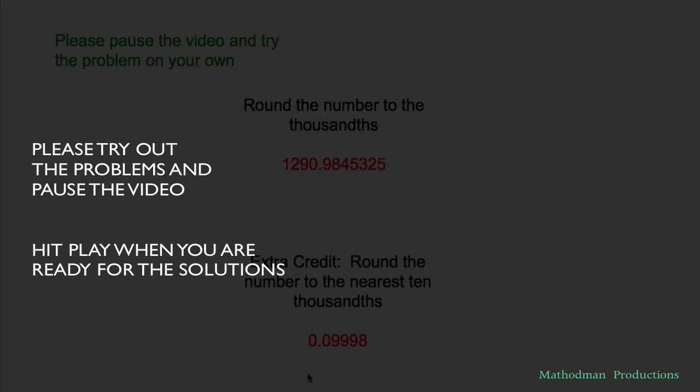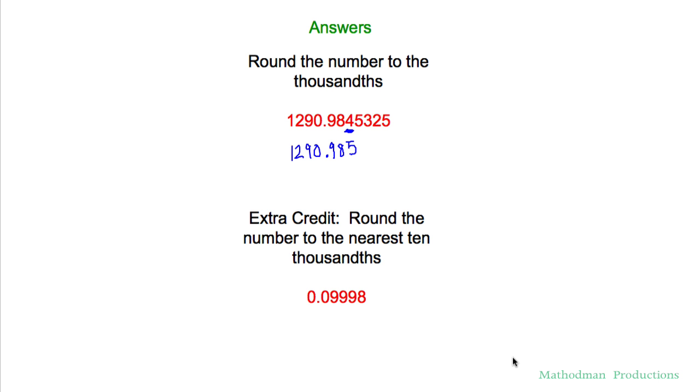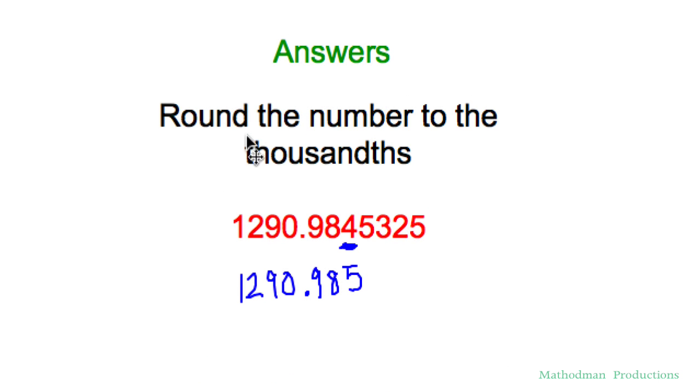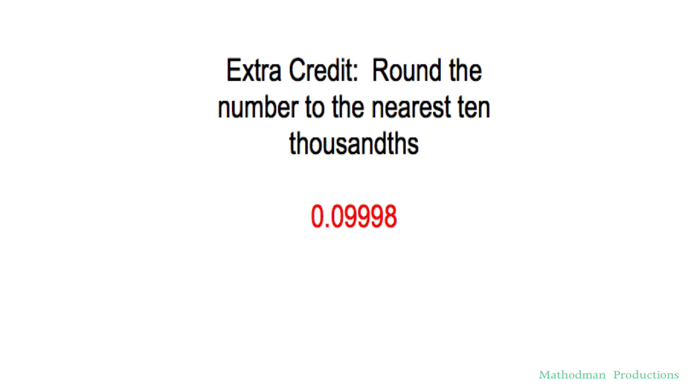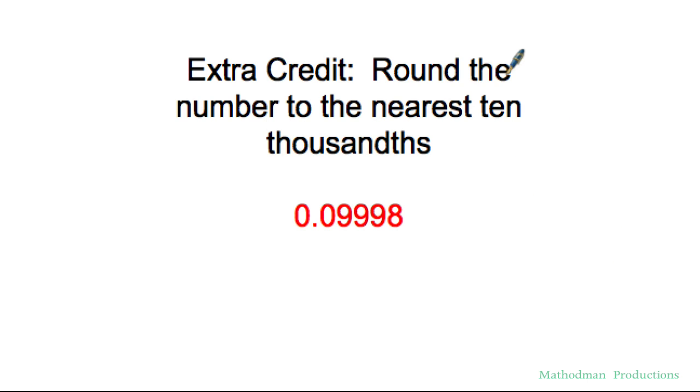Here are your solutions. First one, round to the thousandths. Thousandths place is 4 right here. I take a look to the right of it, it's a 5 and above, which changes that 4 into a 5. Everything to the left usually stays the same. In this case scenario it does, so 1290.985. Last one, extra credit round. If you got this, then you will ace your test.